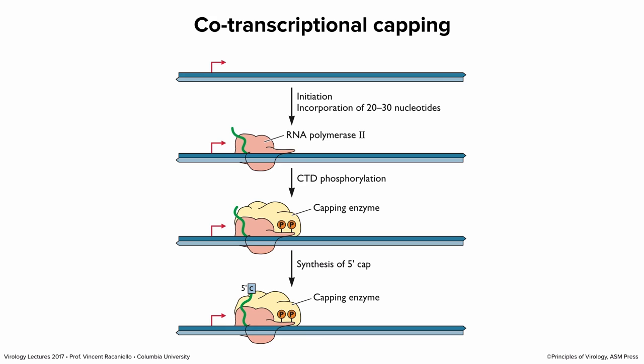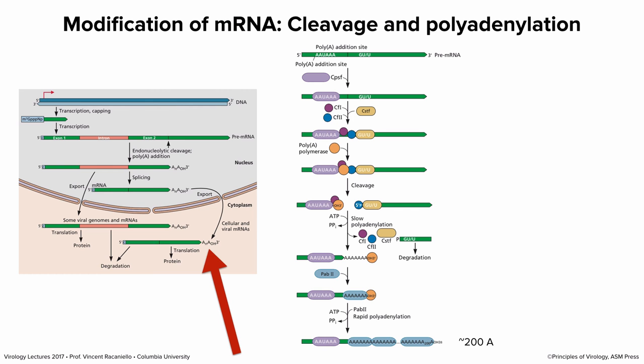How is the cap added? The RNA polymerase binds at the initiation site and starts making mRNA. After about 20 to 30 nucleotides are made, the capping enzyme — a separate enzyme — comes and joins the RNA polymerase. The capping enzyme is recruited when the polymerase's C-terminal domain gets phosphorylated. The cap isn't added at the very beginning of transcription partly because many initiations are aborted — the polymerase falls off and makes small pieces of RNA. Only when it's clear transcription will continue is the cap added.